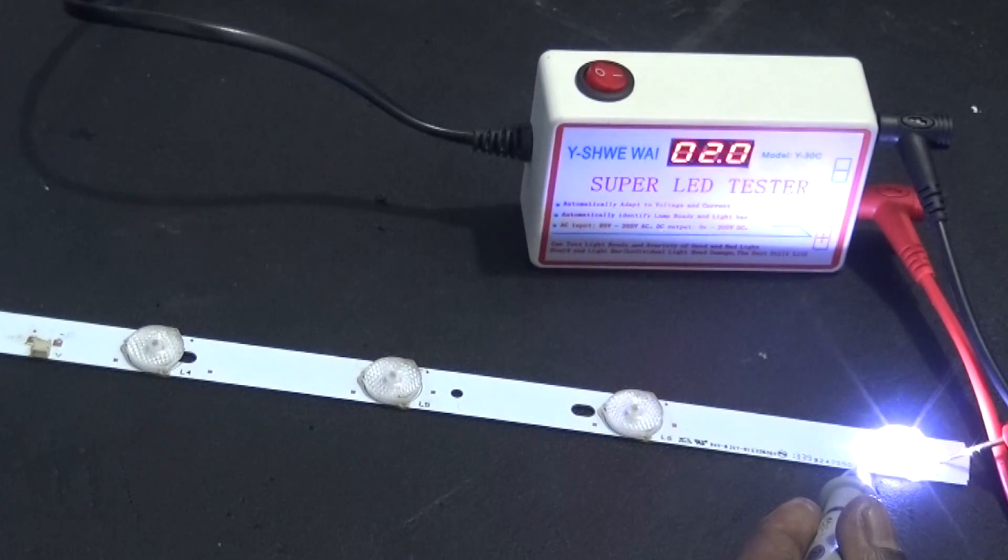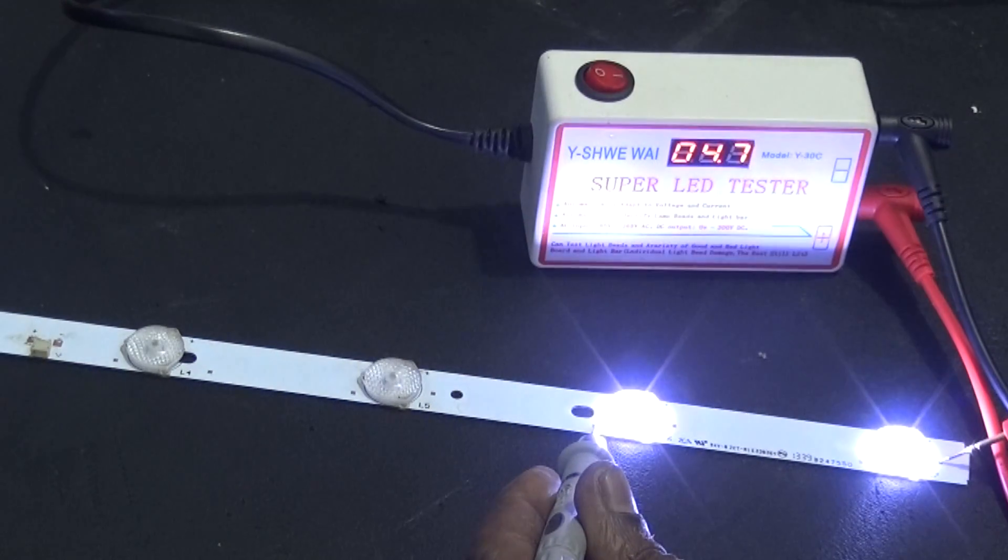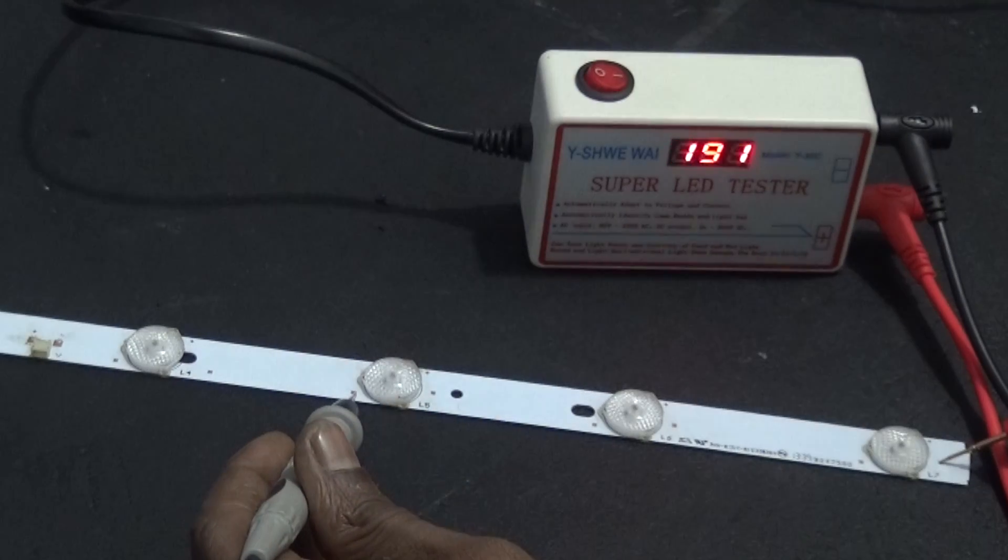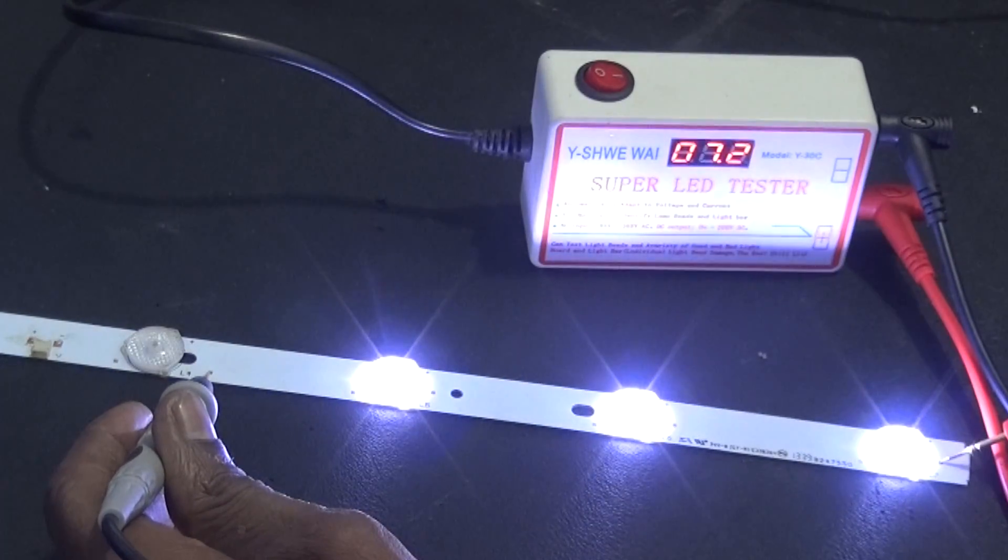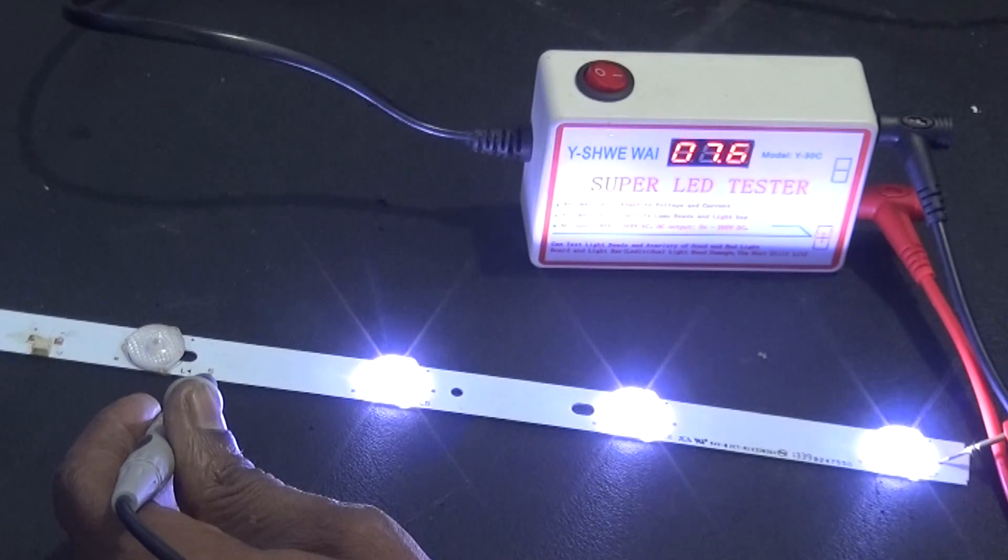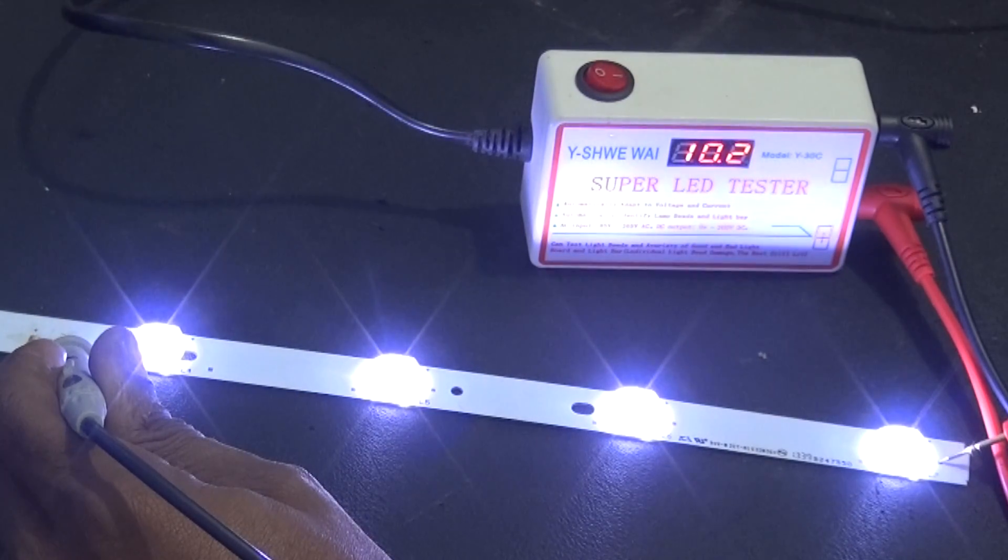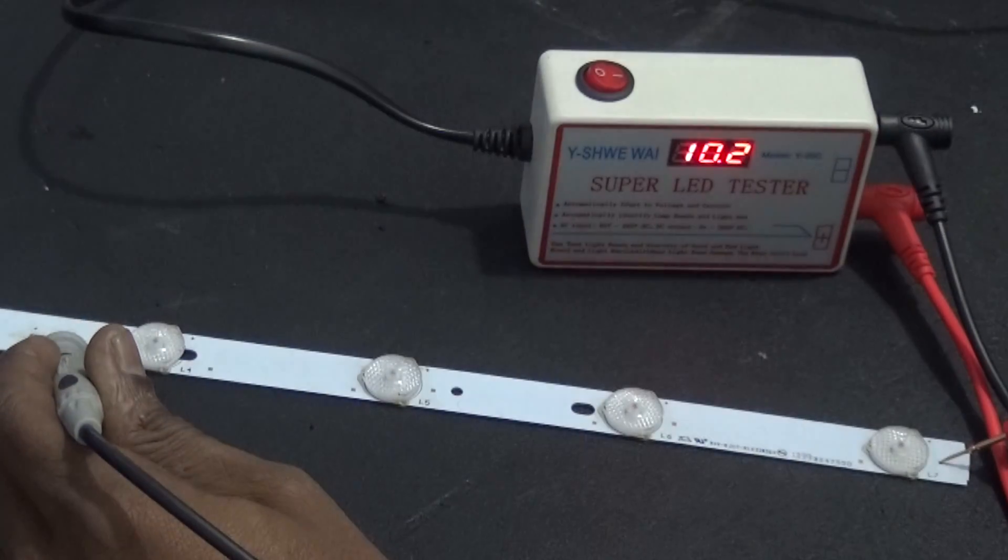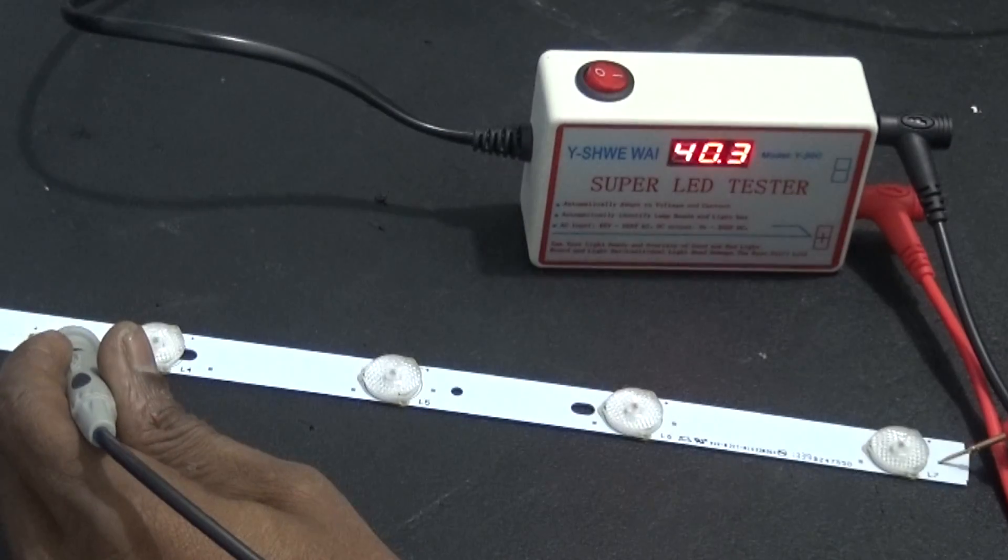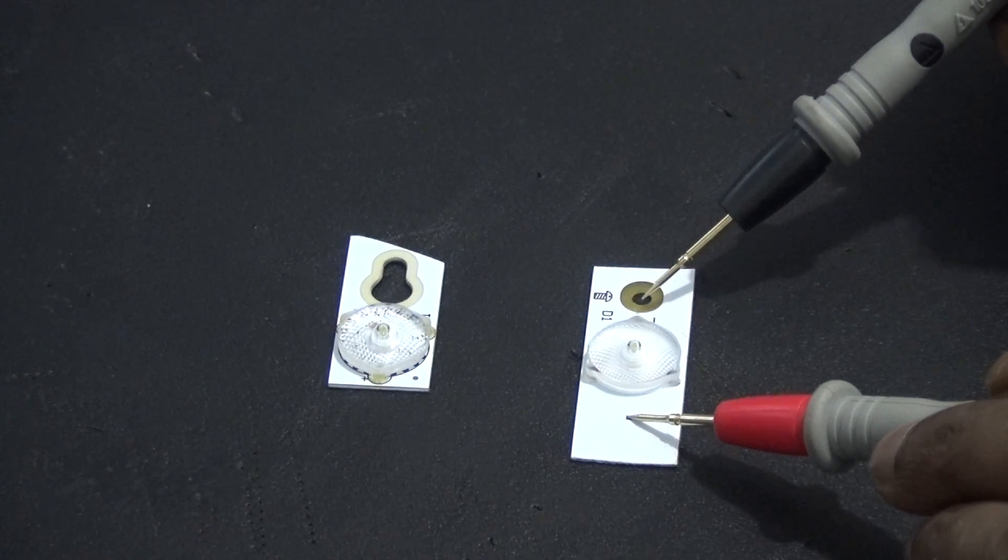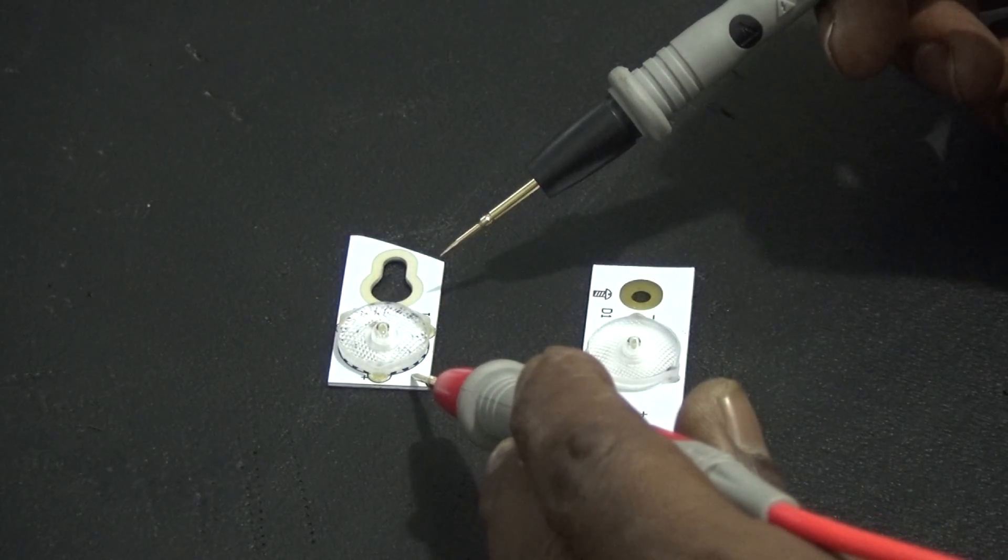And this here power valve 3 volts, and this here power valve 3 volts. This bulb is 3 volts, this bulb is 3 volts, and it's 6 volts.